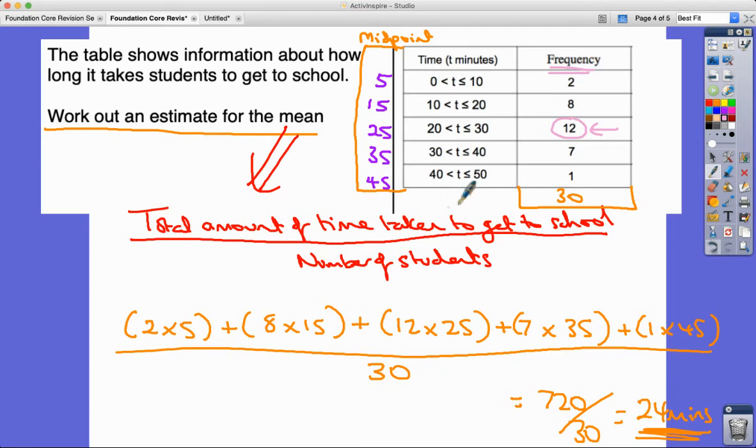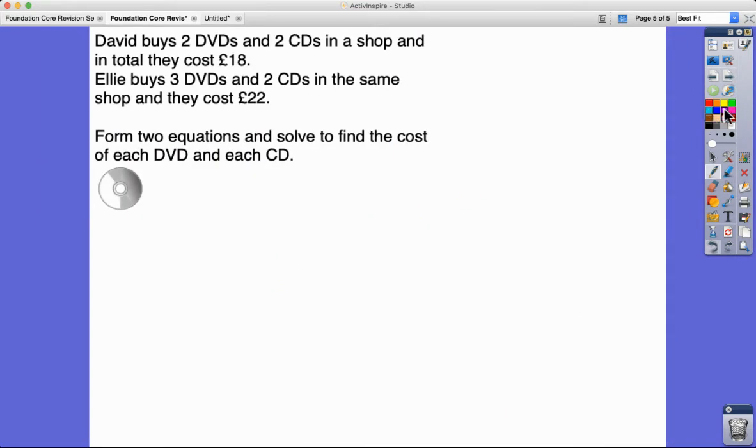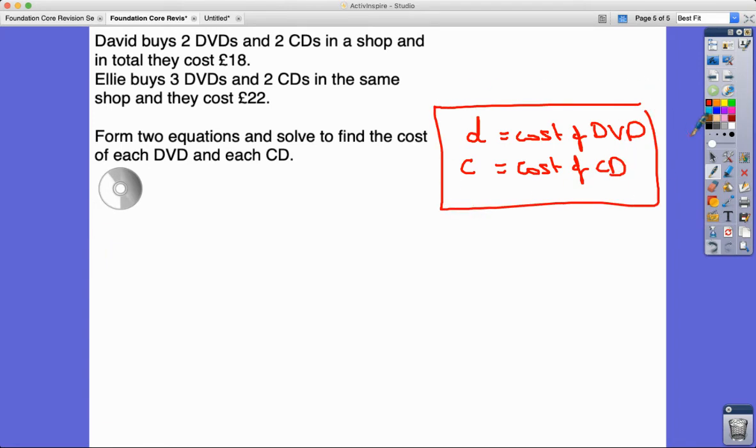Last question. This one we're going to use a bit of algebra. We're going to set up some equations and solve simultaneously. Let's have a look. David buys two DVDs and two CDs in a shop. In total they cost £18. Ellie buys three DVDs and two CDs in the same shop and they cost £22. Form two equations and solve them to find the cost of each DVD and each CD. So I'm going to call the cost of a DVD d, and for the CD I'm going to go for c. So two times the cost of a DVD plus two times the cost of a CD equals £18. And for Ellie she bought three DVDs and two CDs and they cost £22.